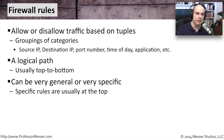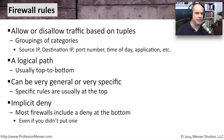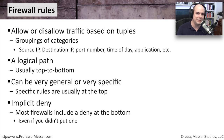Or a rule might be very specific: if you are in the marketing department and coming from a particular source IP address, then you have access to a specific resource on the internet at another IP address. That's a very specific rule, so you tend to put specific rules at the top of your firewall list so they fire first if applicable, and more general rules go at the bottom.